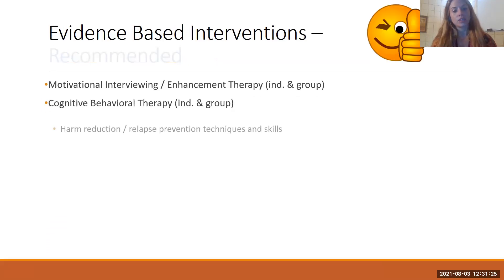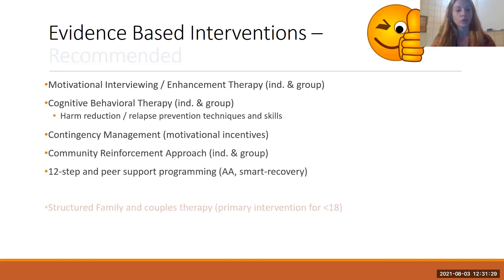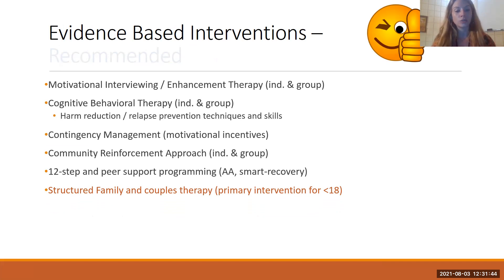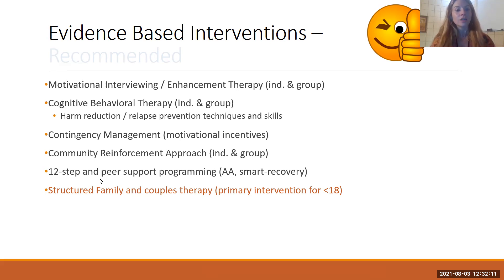What is recommended: absolutely motivational interviewing and enhancement, both individual and group. There are all kinds of cognitive behavioral interventions — individual and group — that fall under the harm reduction model and can be used at any point in the stages of change. Contingency management, which is an incentive-based program, can be added onto treatment as usual. Community reinforcement has a lot of evidence and can be done both individual and group. 12-step or peer programs — SMART Recovery particularly has good evidence. And what we don't use enough of is integrating structured family or couples therapy, because so much of what we need to change has to do with the home environment and social interactions.